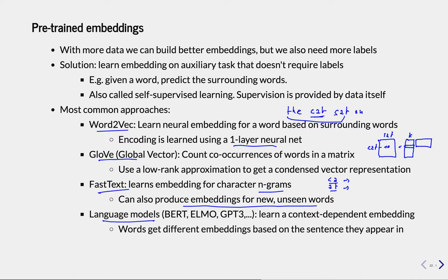Finally we have language models — very well-known state-of-the-art models like BERT, ELMo, and GPT-3. They are very expensive to train, costing millions of dollars. The nice thing is that they can learn context-dependent embeddings. While Word2Vec, GloVe, and FastText always give you the same embedding for the word 'cat', in language models the encoding may actually depend on the context the word is used in — you may get a different encoding for 'cat' in one sentence versus another.